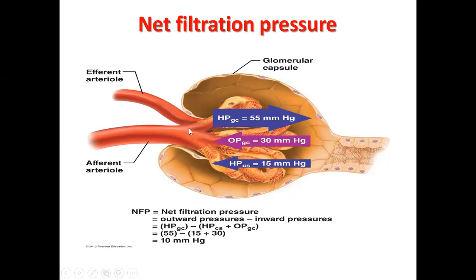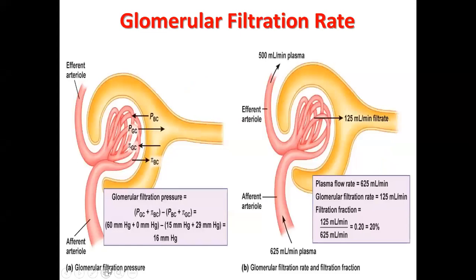The values include 55 mmHg hydrostatic pressure of the glomerular capillaries, 18 mmHg for oncotic pressure, and 30 mmHg for hydrostatic pressure of the Bowman's capsule. The net filtration pressure is approximately 10 to 16 mmHg. Normally, the Bowman's capsule filtrate doesn't contain protein, so oncotic pressure there is essentially zero.